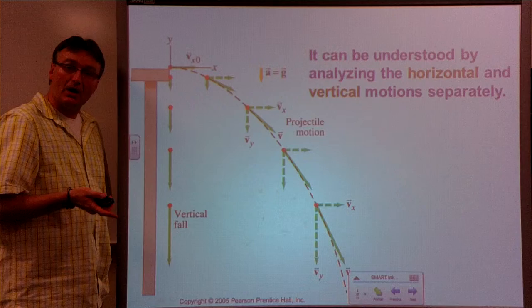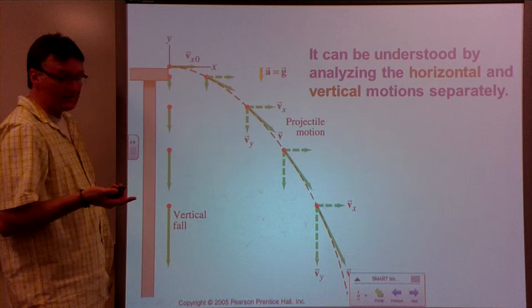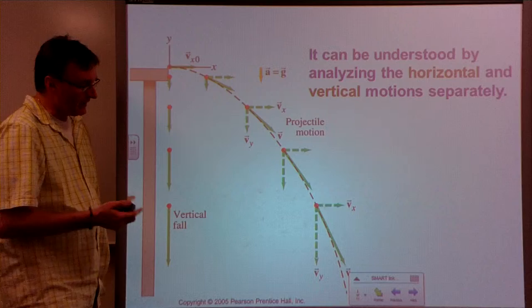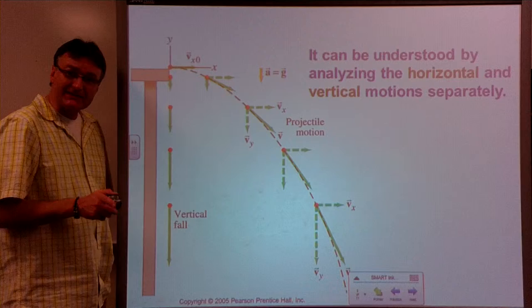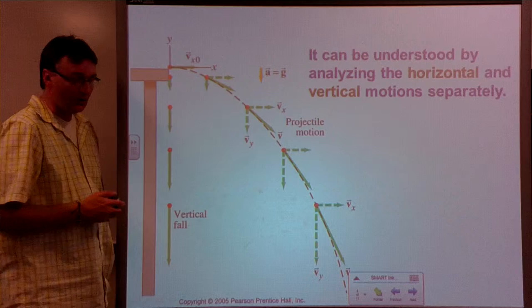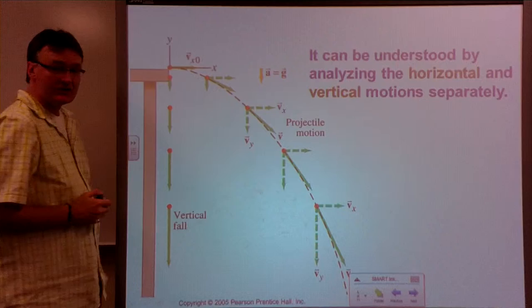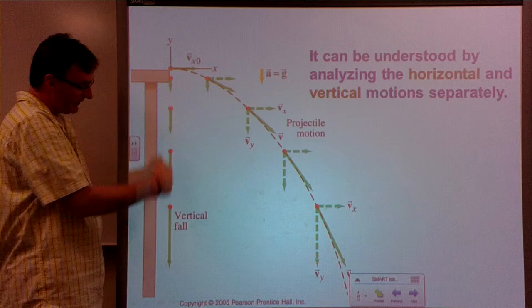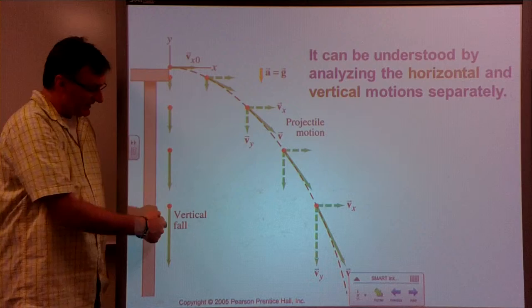The velocity component in the x direction is staying the same. What's happening is that it's speeding up in the y direction, so it appears as though it's slowing down in x. But really all that's happening is the component of velocity in the y direction is getting larger and larger. There is no acceleration in the x direction — nothing is speeding up or slowing down there. However, in the y direction, gravity is accelerating the object, so it is indeed speeding up in y.